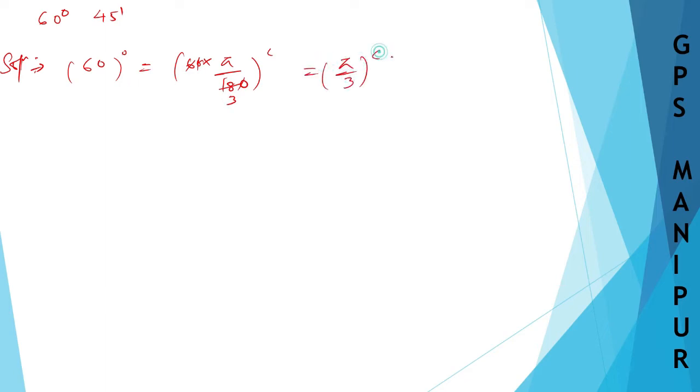Now 45 minutes. Let me convert 45 minutes into degrees first. If I divide by 60, it will be degrees. So 45 by 60, this is degrees. Now if I cancel: 45 and 5, 5 and 10, 3 and 9, 3 and 12, it is 3 by 4 degrees.